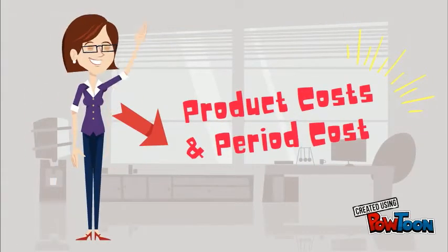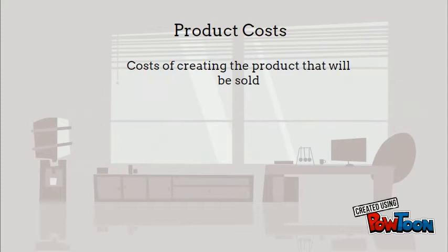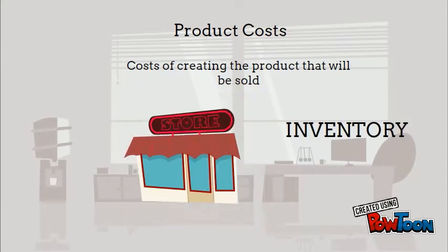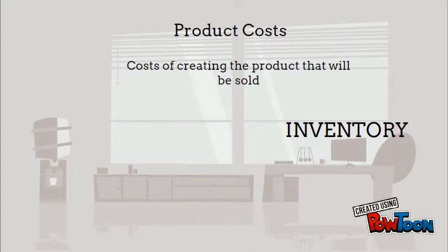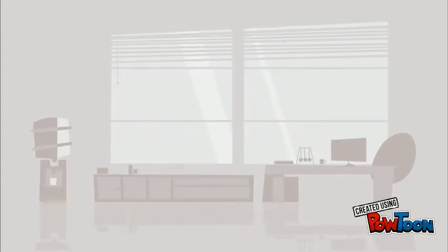We are going to talk about product costs and period costs. Product costs are the costs involved in creating the product that will be sold, which we know is something called inventory. But before we can sell those products, we first need to build them.